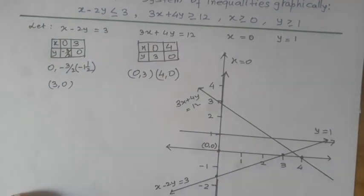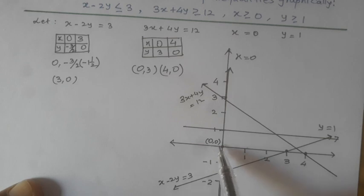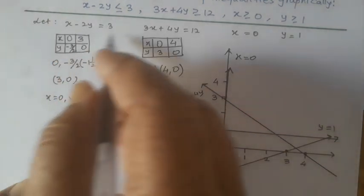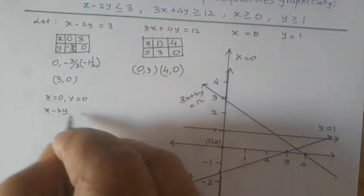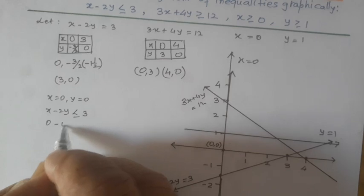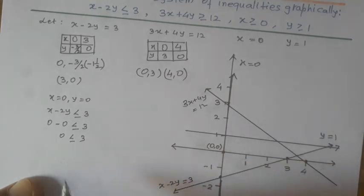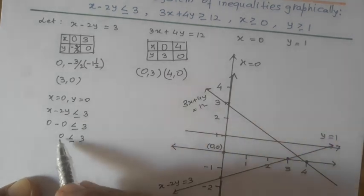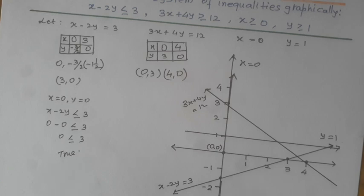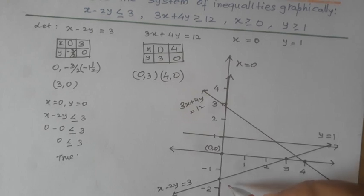Now, we have to determine which part of the line our answer will lie. For that, we are taking origin x equal to 0, y equal to 0. Then, for inequality x minus 2y less than equal to 3, putting the values, it will be 0 minus 2 into 0, 0 less than equal to 3. Ignoring the equal sign, 0 is really less than 3, so it is true.